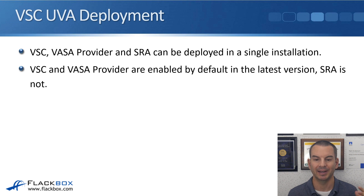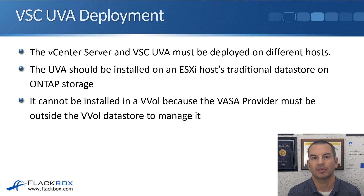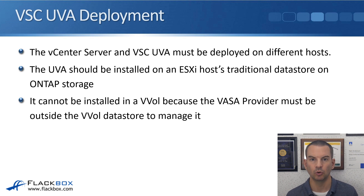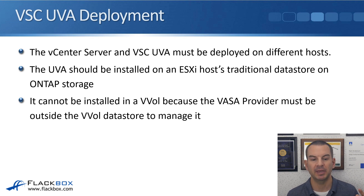The VSC and VASA provider are enabled by default in the latest version when you deploy the UVA; SRA is not. The vCenter Server and the VSC UVA must be deployed on different VMware hosts — in the lab environment, the VCSA runs on ESXi 1 and the VSC virtual machine runs on ESXi 2. The UVA should be installed on an ESXi host traditional datastore on ONTAP storage, because it cannot be installed in a VVOL — the VASA provider must be outside the VVOL datastore to manage it, otherwise you'd have a chicken-and-egg problem.